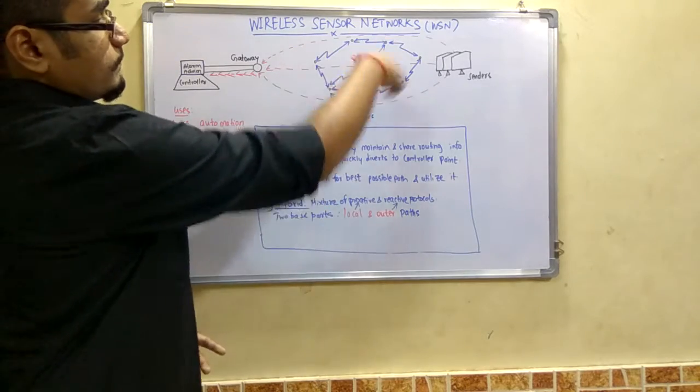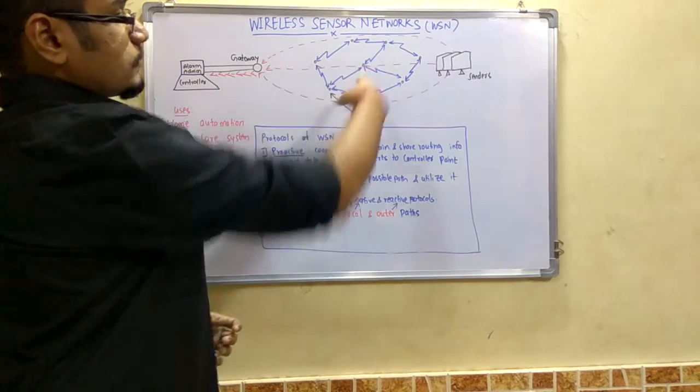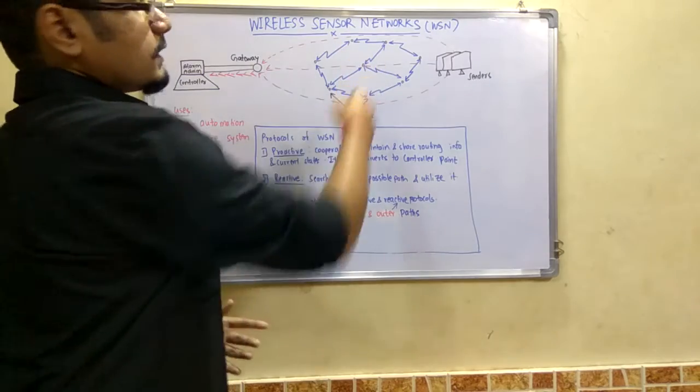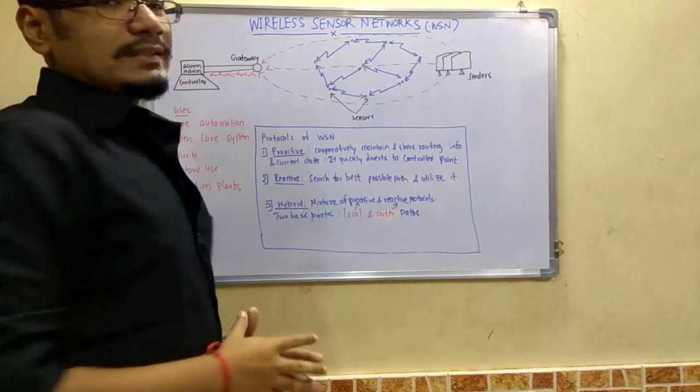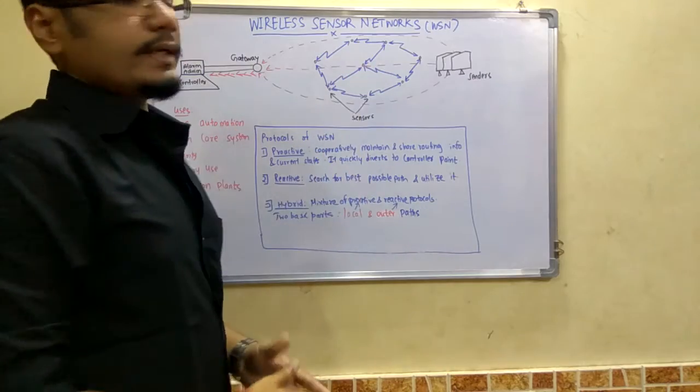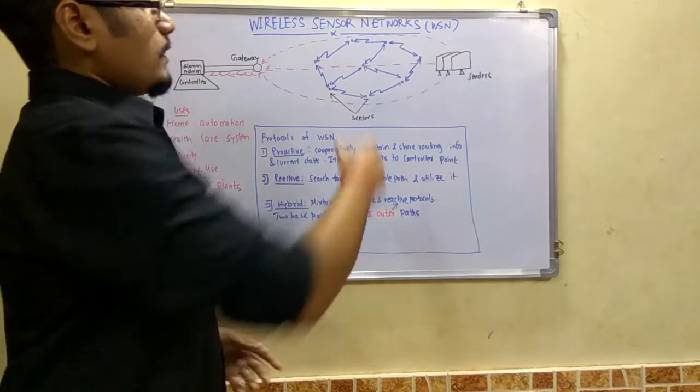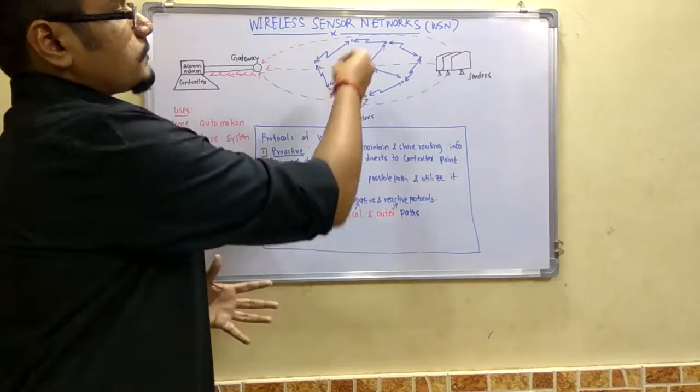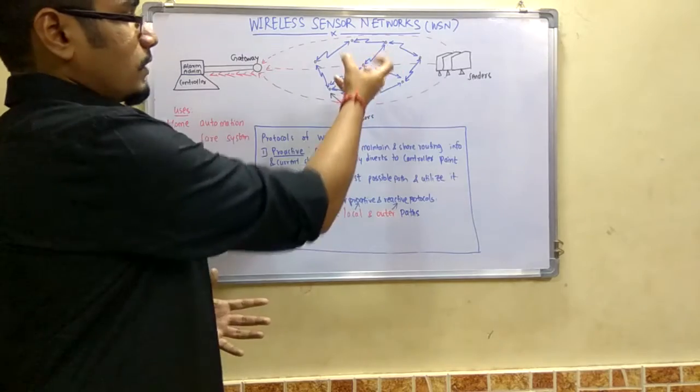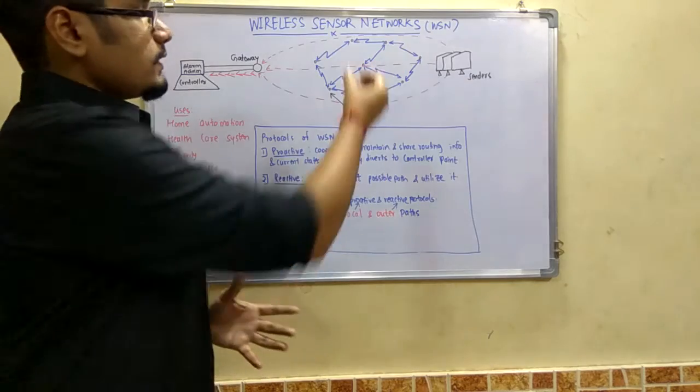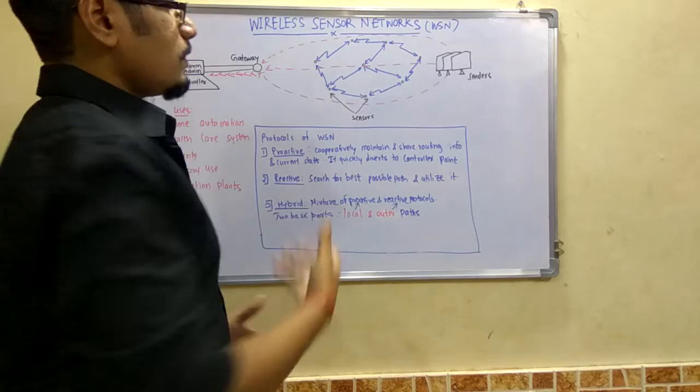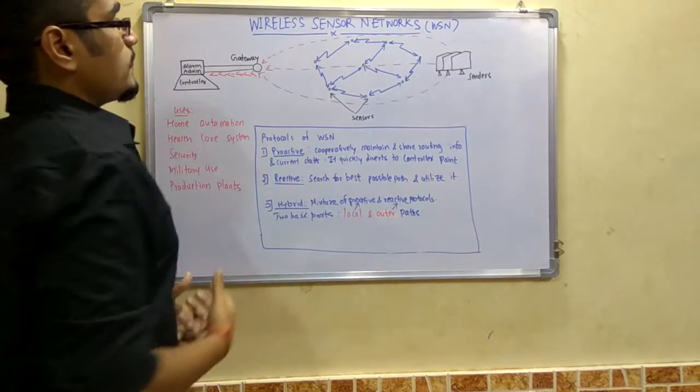These small circles in between are the sensor networks which communicate between each other via means of a small powerful signal which lasts for a very short duration and ultimately gives all the signals back to the gateway which processes it in a cooperative functional manner.